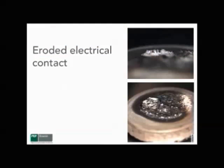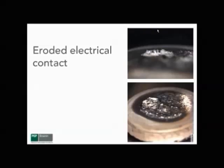The first slide is a picture of an electrical contact set that has eroded. You can see that there's a fair amount of disruption of the contact surface, which is very typical of electrical contacts that have seen relatively severe arcing.